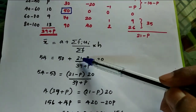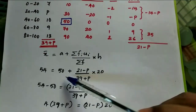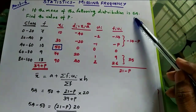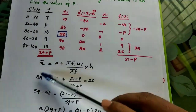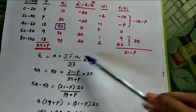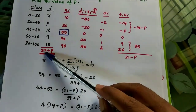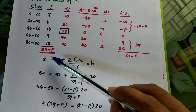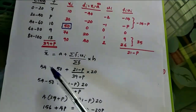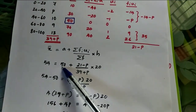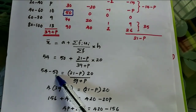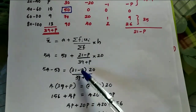Now apply the step deviation method: x-bar equals a plus sigma(fi·ui) divided by sigma(f), into h. Here x-bar is given as 54, because the mean of the distribution is 54. Assumed mean a is 50. So: 54 equals 50 plus (21 minus p) divided by (39 plus p), into 20, where class width h equals 20. Transposing 50 to the left side: 54 minus 50 equals 4.